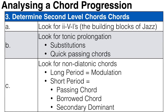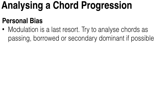Non-diatonic chords can either change the tonal center for a long period of time — which we call modulation — or for a short period, in which case it can be a passing chord, a borrowed chord, or a secondary chord. Passing chords, borrowed chords, and secondary chords generally last no more than half a bar to one bar. My personal bias is that modulation is a last resort: I try to analyze all non-diatonic chords as passing, borrowed, or secondary first, and only then consider modulation.